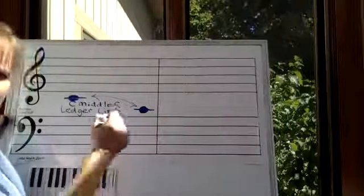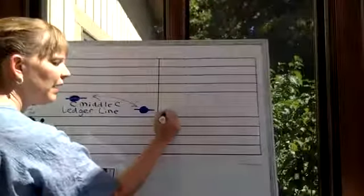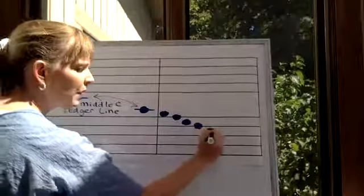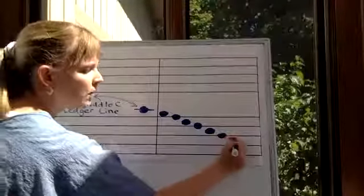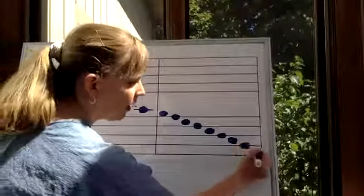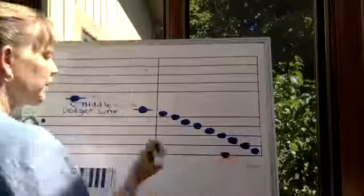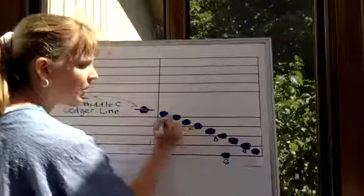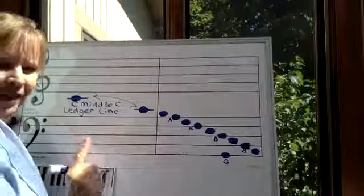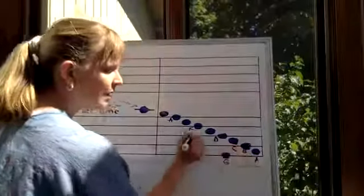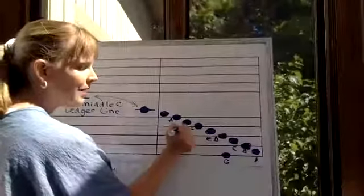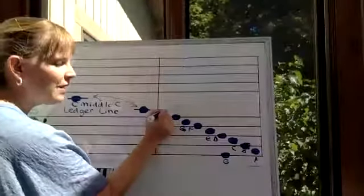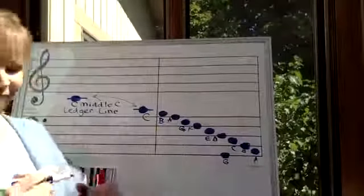And you're going down, so you're going backwards in the alphabet: C, B, A, G. You see how that works? And it will be exactly what we talked about before with the notes. Okay, so we've got Great Big Dogs Fight Animals for the line notes of the bass clef, and we have All Cows Eat Grass for the spaces of the bass clef. And then, obviously, A is here, so this space above is a B, and C, middle C there. You see how that works?